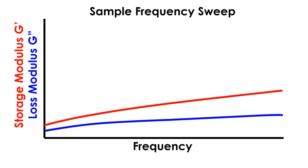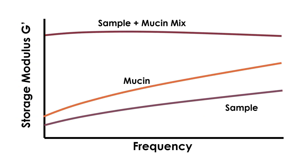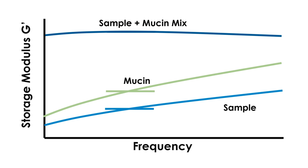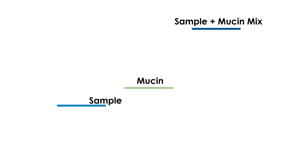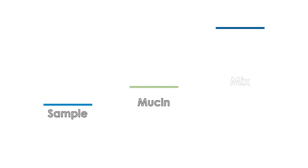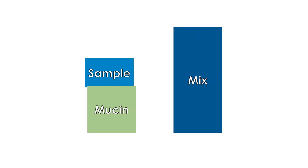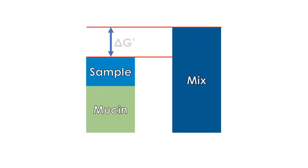Mucin, present in natural tears, helps provide desirable rheological properties and adhesion of the tear film directly to the mucosal layer of the eye. We can investigate mucoid properties of artificial tears with a variety of instrumental techniques.